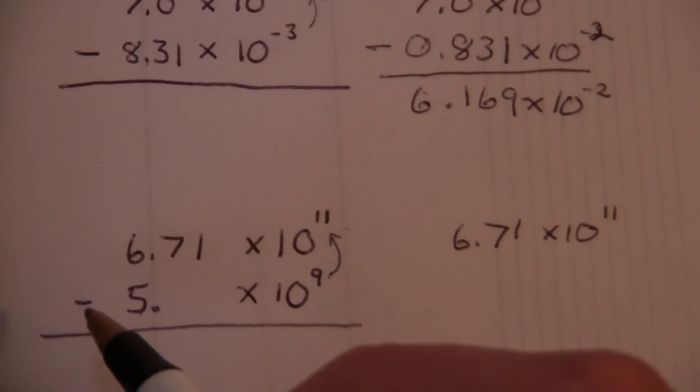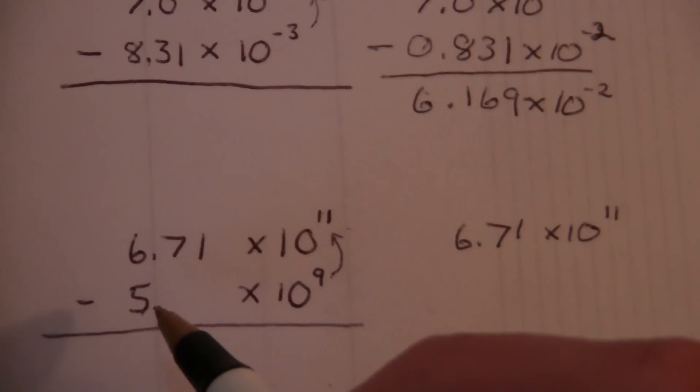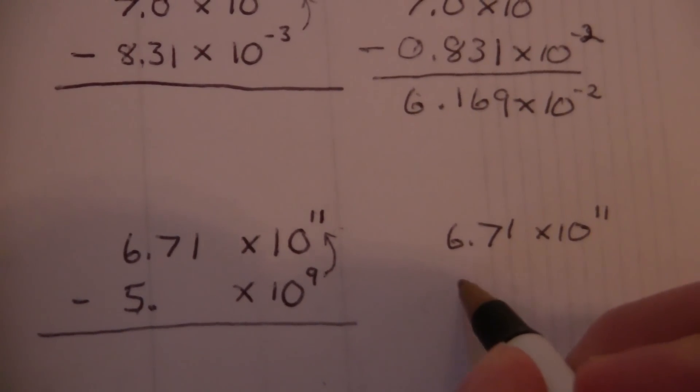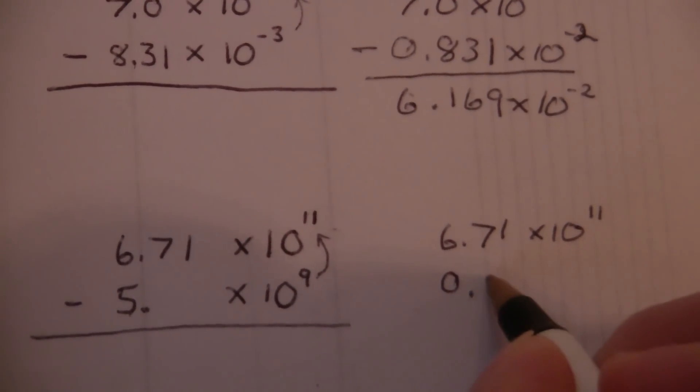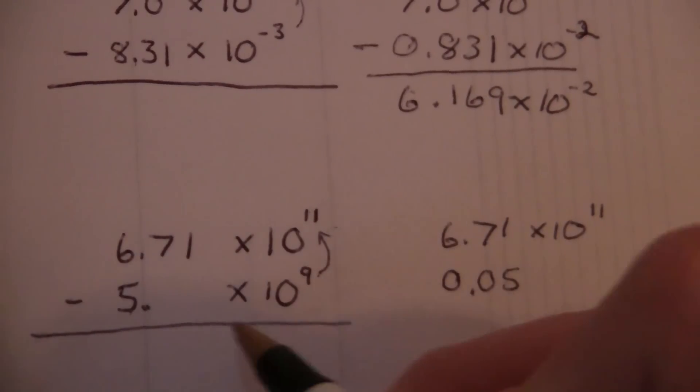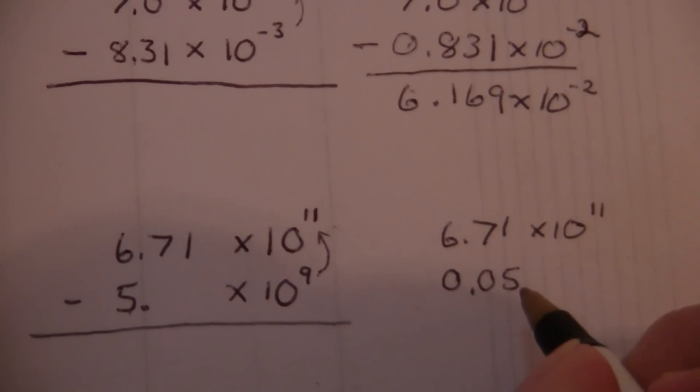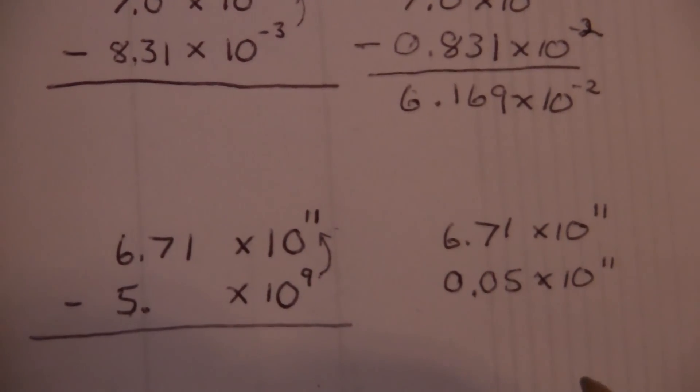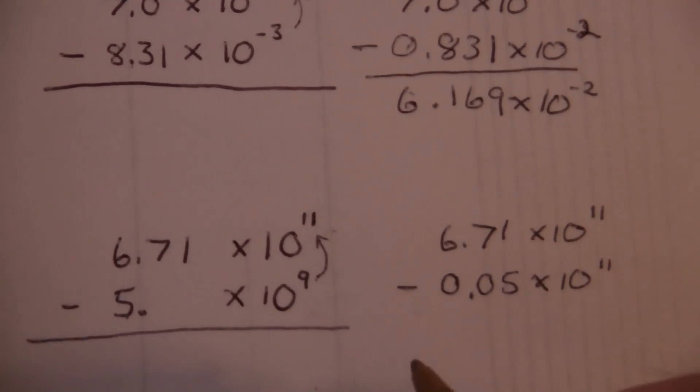So that means I have to be 2 places further over in order to get to that same place. So this will be 0.05, two places further back from where it was, times 10 to the 11th.